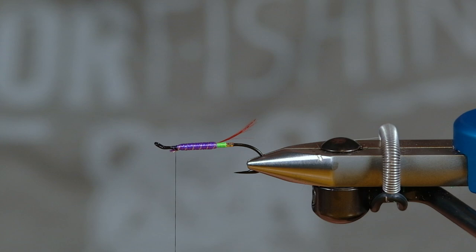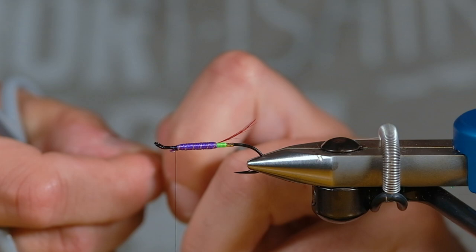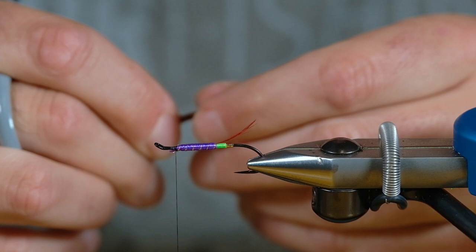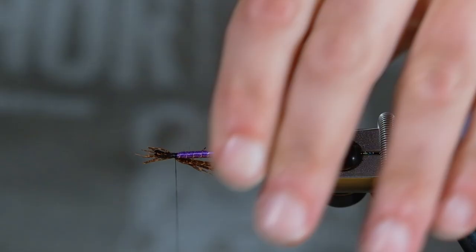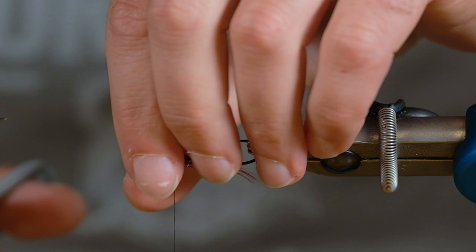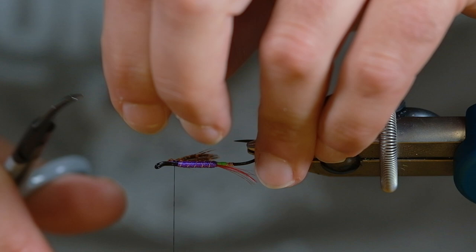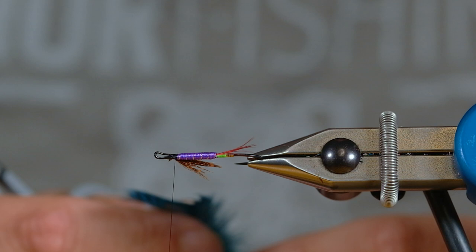And I just kind of roll that around in my fingers. And I put this in kind of size up where I want it. Usually right to the end of my body is the way I like to tie in my throats. All right, that is layer number one.